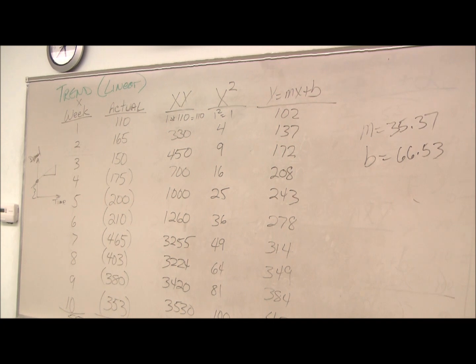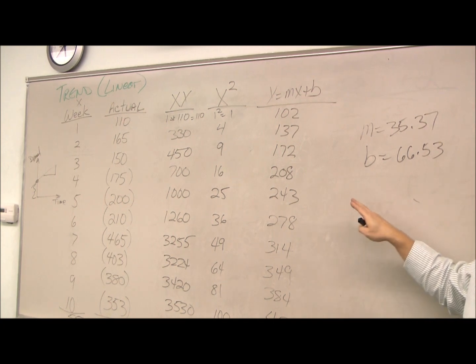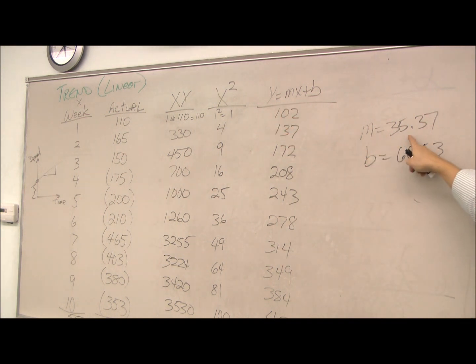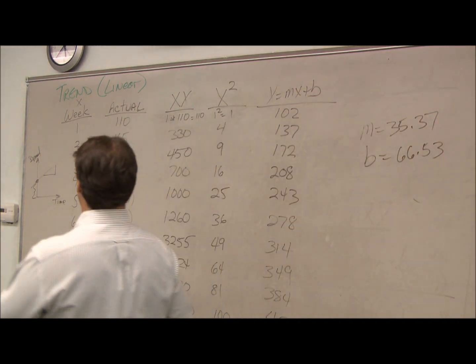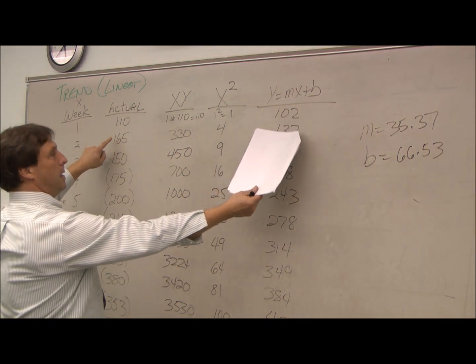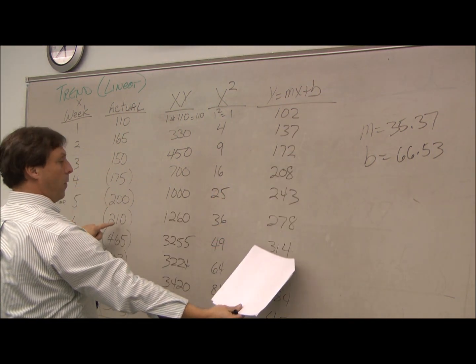All right, so all I did is, just for demonstration purposes, we figured out our equation, we figured out our m, we figured out our b. Again, the m is the slope of our line, the b is our intercept over the demand axis here. Our x is simply going down, and we can see how this tracks our forecast.